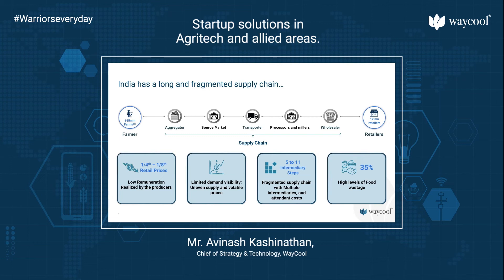What is happening as a result in this supply chain and how is it affecting each member of the ecosystem? Because there are so many people in the chain, and even with the best efficiencies of all these players, just because of the fact that there are so many people in between, the remuneration realized by the farmers is lesser — often it is one fourth of what the retail price of the end product is.